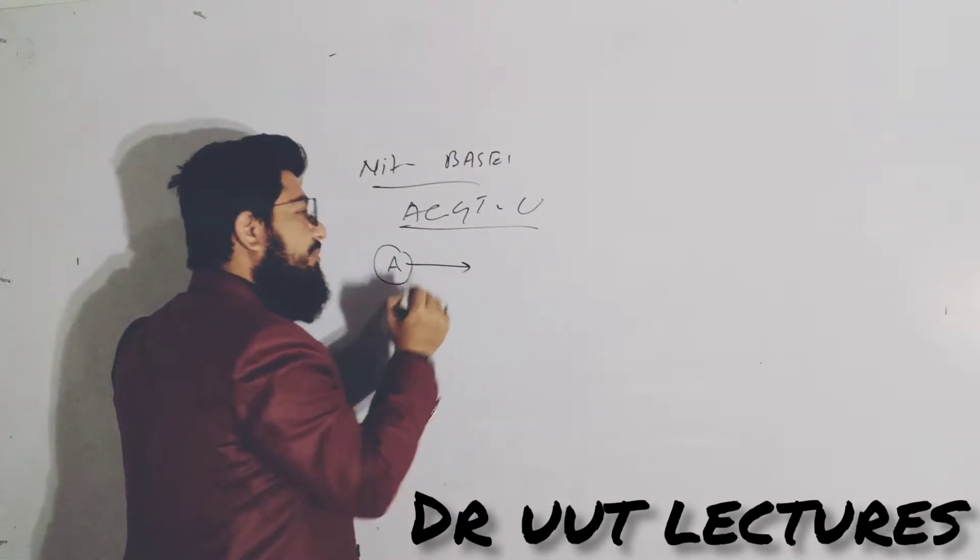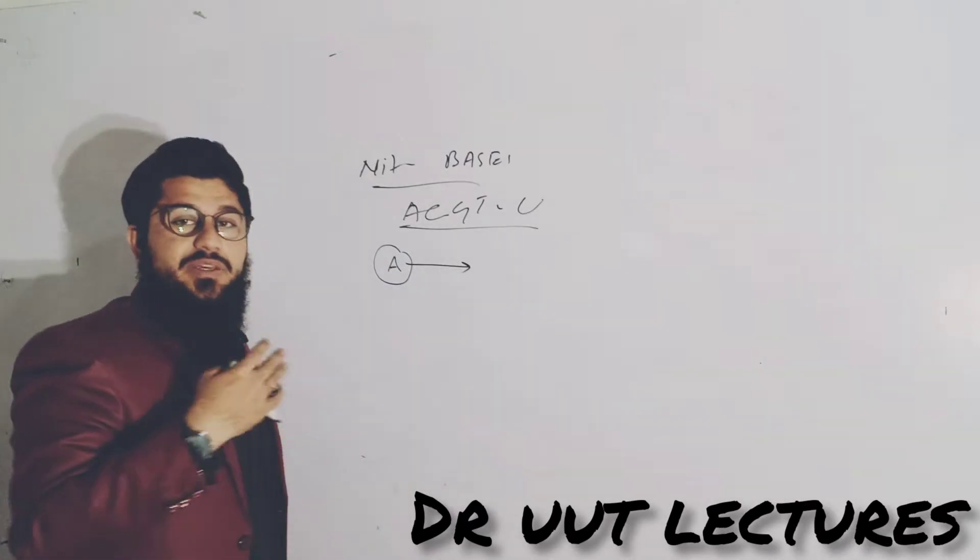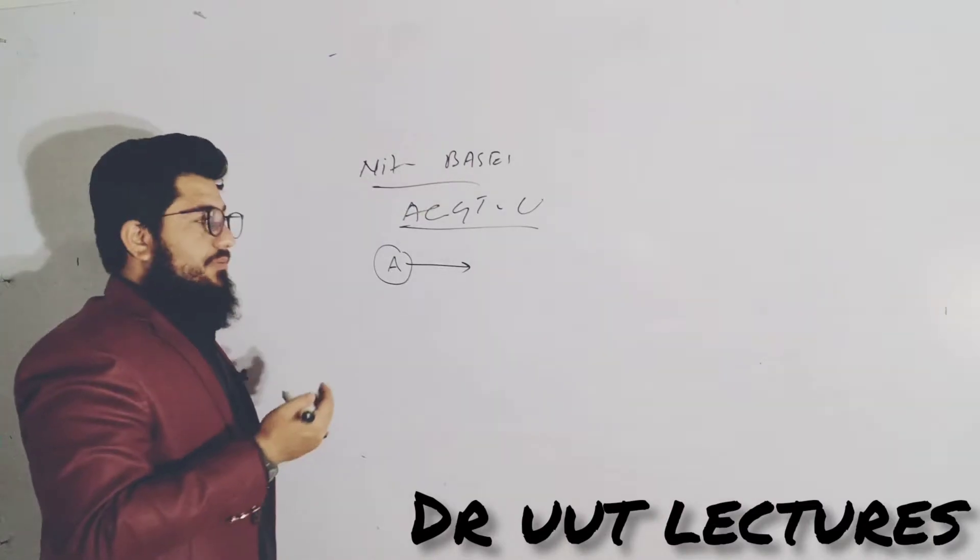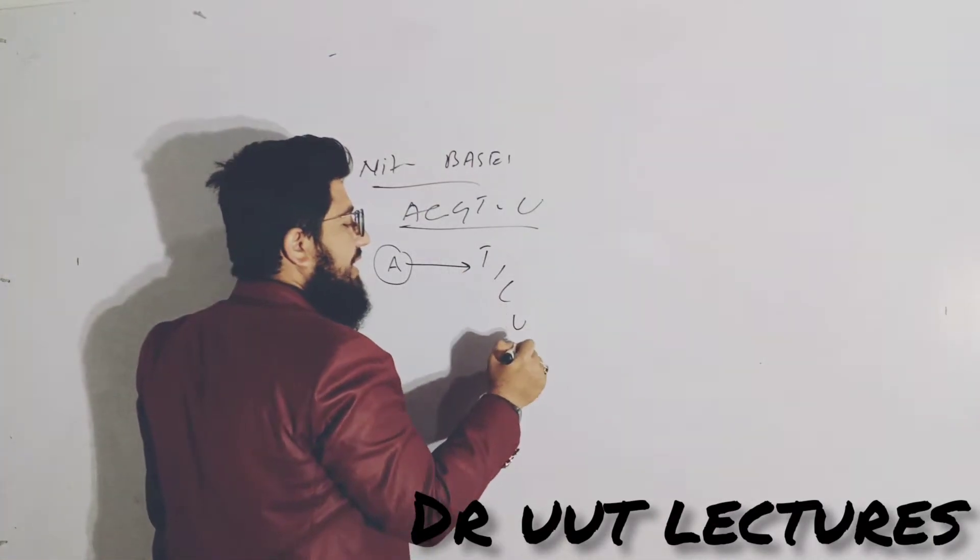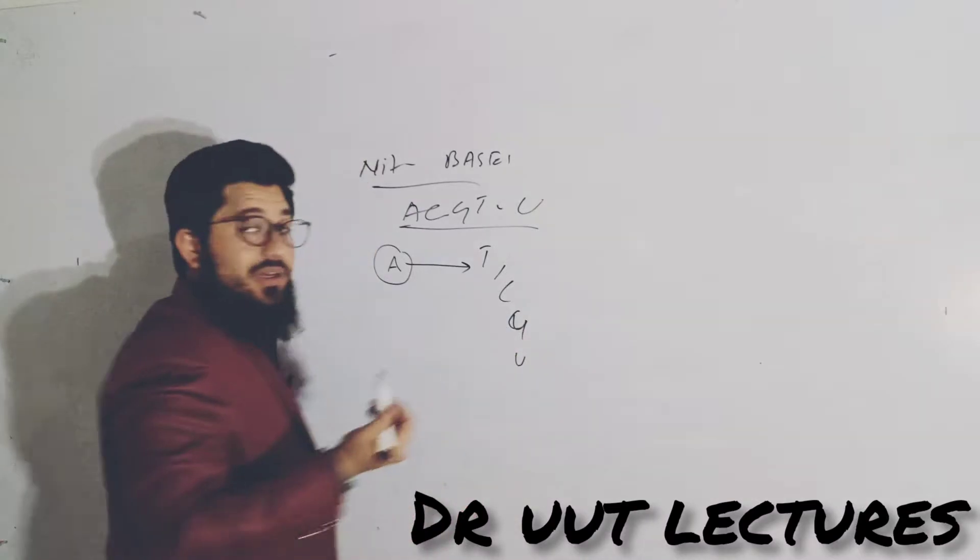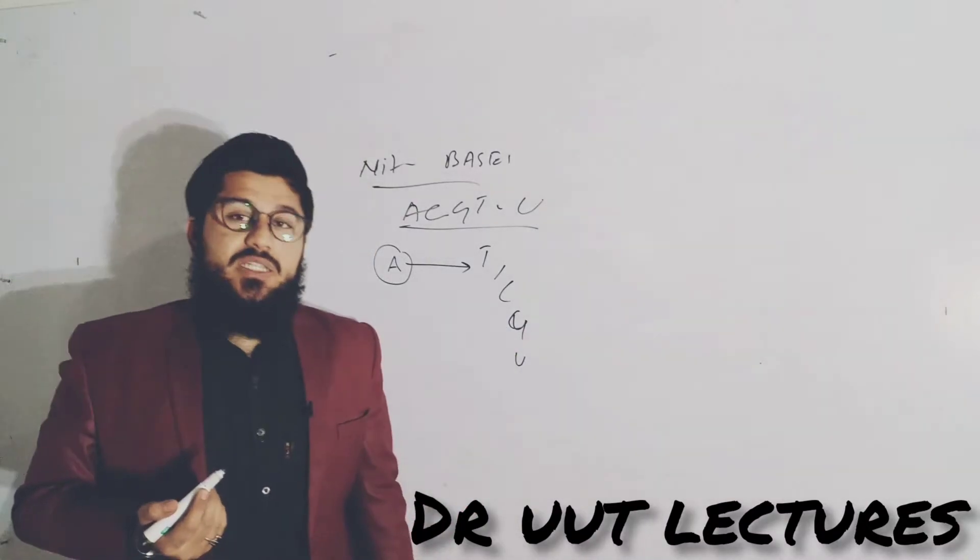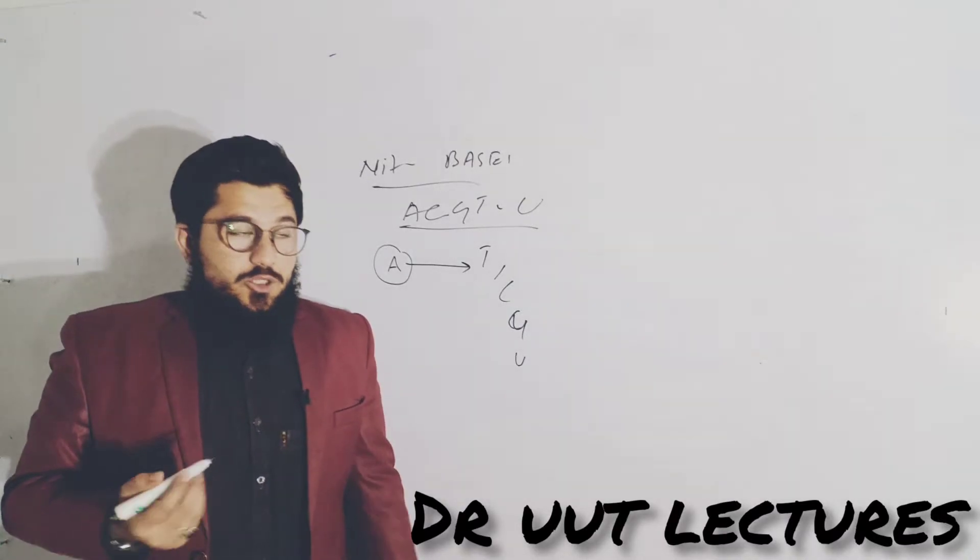Tell me what A is actually supposed to bond with. What is the base pair for the adenine? Adenine is supposed to bond with what? Thymine, cytosine, guanine, or uracil?